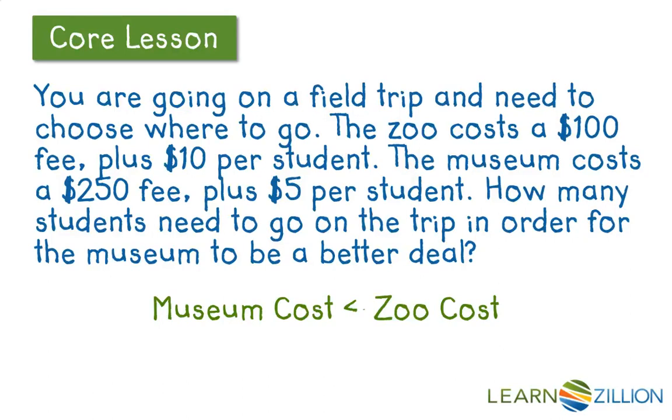That $250 is a flat fee you pay at once, so there's no variable attached to it. The $5 is per student, so that needs to be multiplied by your variable. Let's use s for students. The zoo cost is $100 plus $10 per student, so $100 + 10s.